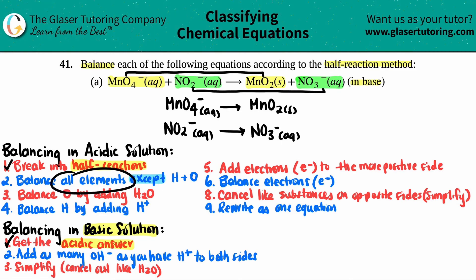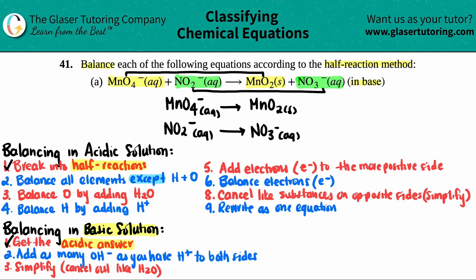Now for step two, we need to balance all of the elements except for hydrogen and oxygen — so don't look at your hydrogens or oxygens yet. I have one manganese on each side, so that's balanced. I have one nitrogen on each side, so that's balanced too. This step was already done for us, so we can skip right over.